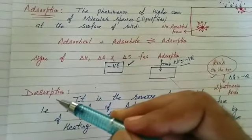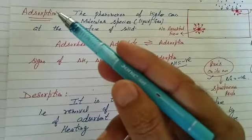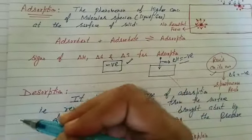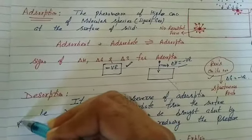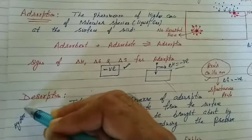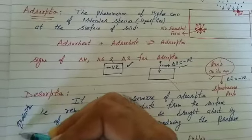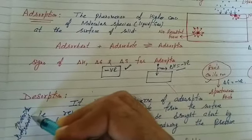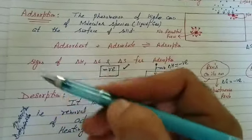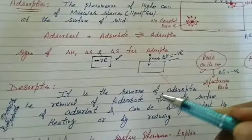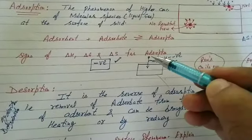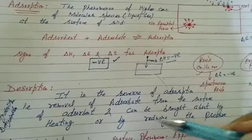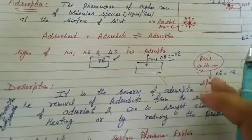Next: desorption. Desorption is the reverse of adsorption — just as hydration means addition of water and dehydration means removal of water, desorption means removal of adsorbate from the surface of adsorbent. It can be done by heating or by reducing the pressure.